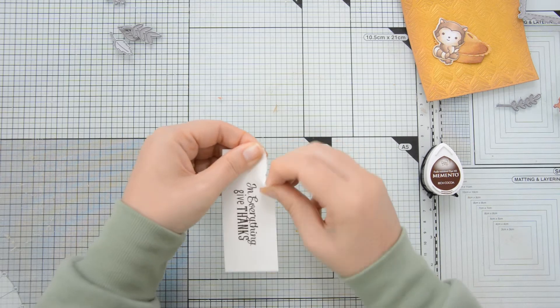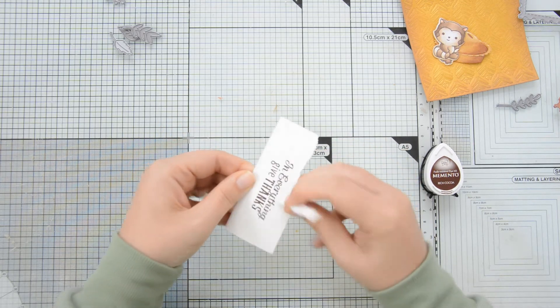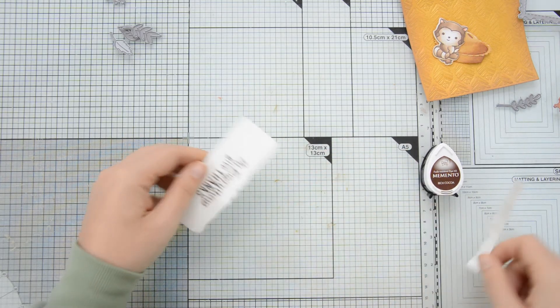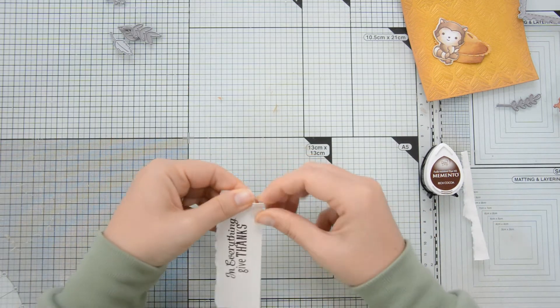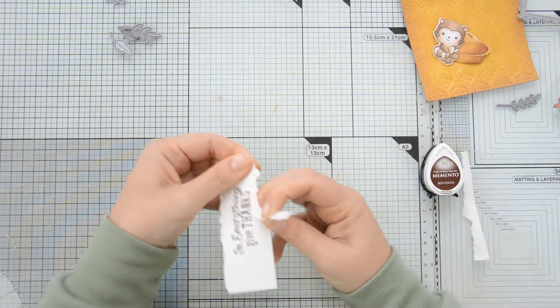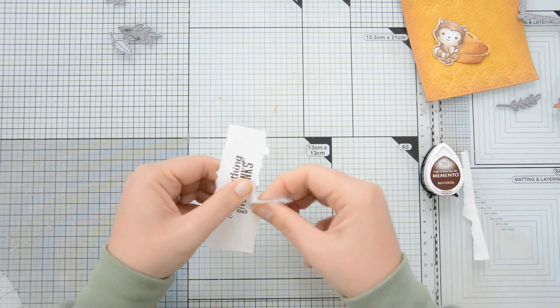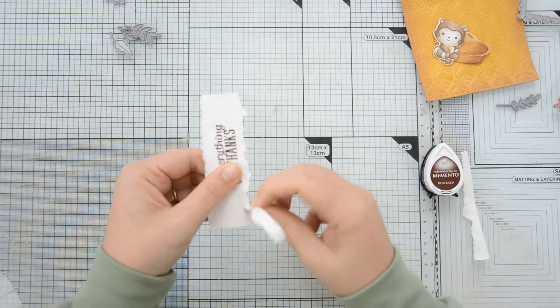I then stamped my sentiment with memento dew drops in rich cocoa on some watercolor cardstock. This is Canson Excel watercolor cardstock and the stamp that I used for the sentiment is part of the Indian summer stamp set.